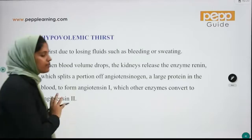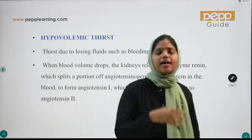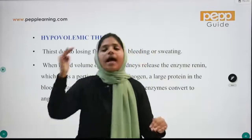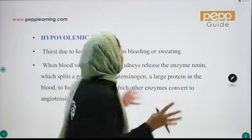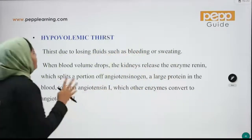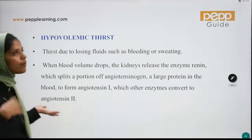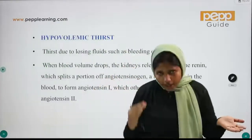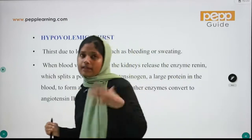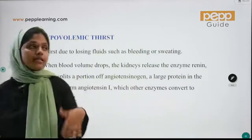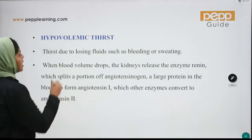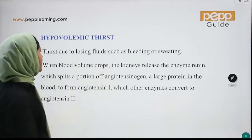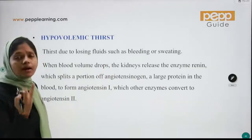The next type of thirst is hypovolemic thirst. Hypo means low and volumic means volume — so hypovolemic means low blood or body fluid volume. When we have bleeding or sweating, we lose body fluid and this triggers hypovolemic thirst.